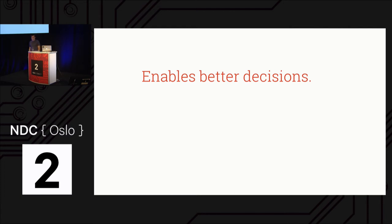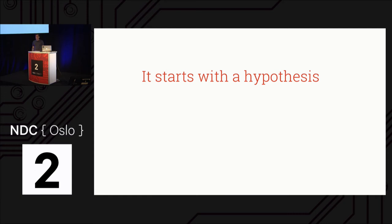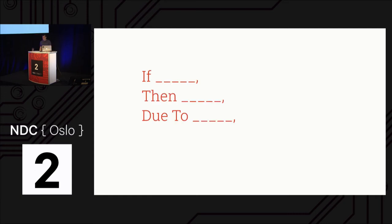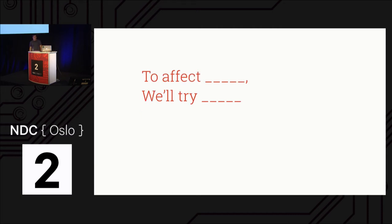It all starts with a hypothesis. We have some idea of what we want to do. Academia has their take, but the short version I found was: if I do something, then users should buy more — due to the red button or something like this. I don't agree with this format because it starts to assume a lot. Instead, I think it should be something like: to affect people buying our product, we'll try to make a button red — but we don't assume that the button color is the reason.